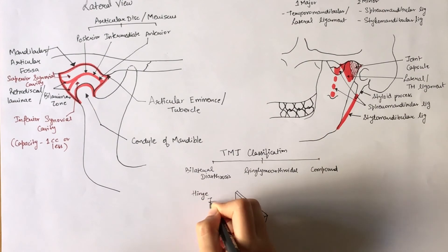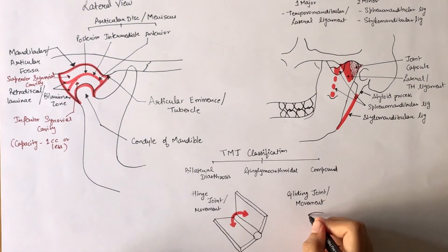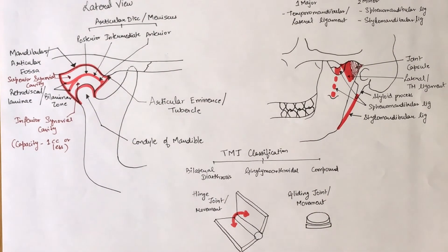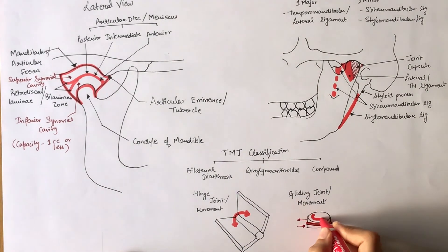Arthrodial, that is gliding joint, is a common type of synovial joint that is formed between bones that meet at flat or nearly flat surfaces. It allows the bones to glide past one another in any direction along the plane of the joint.